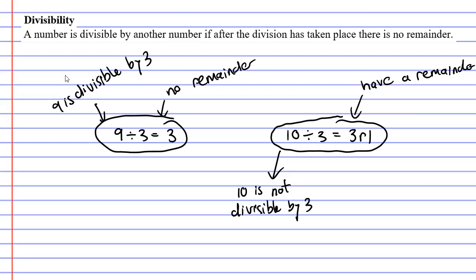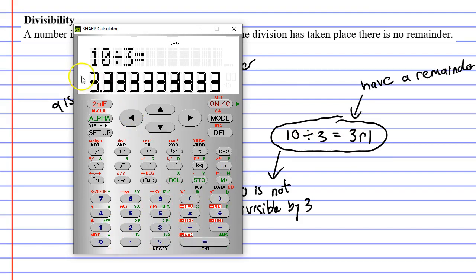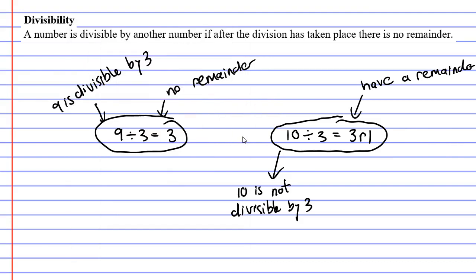We can also check divisibility on a calculator. Let's do 10 divided by 3. You'll notice we get a decimal: 3.33 and so on. So if it's not divisible, we notice it has a decimal.